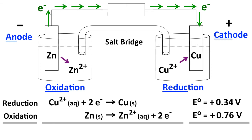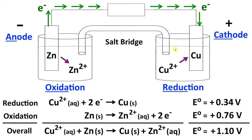The overall reaction for this cell is the same as before: copper 2+ reacts with zinc to make copper and zinc 2+, with a cell potential of positive 1.1 volts. With a voltmeter connected under standard conditions — one molar copper 2+ solution and one molar zinc 2+ solution — we get a reading of 1.1 volts.